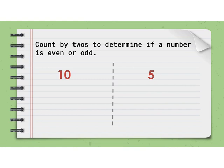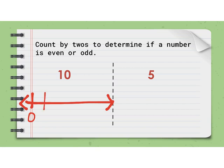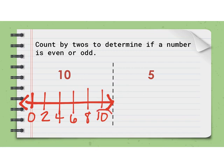If I take a number line and I want to go to 10 and count by twos: zero, two, four, six, eight, ten. Is 10 on my number line? Yes, it is — right here. So I can count by twos to get to 10, which means that 10 is an even number.